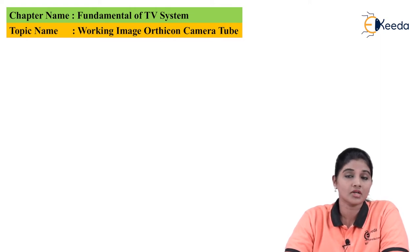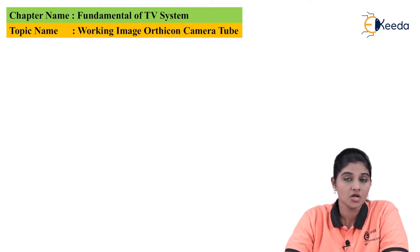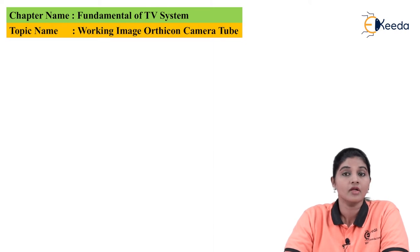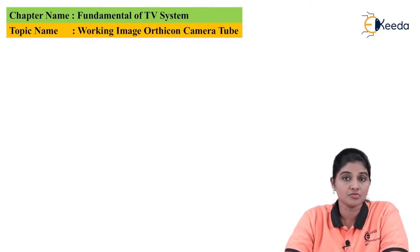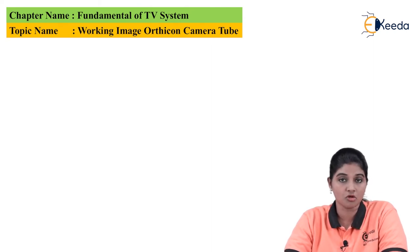Basically three different types of camera tubes are available which operate on various principles of operation. The first tube is the image orthicon camera tube, the second is the Vidicon tube, and the third is the plumbicon tube. The image orthicon camera tube uses the photo emission principle for its operation, whereas Vidicon and plumbicon use the photo conductive principle.